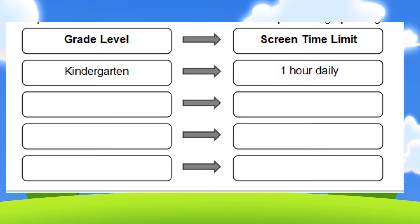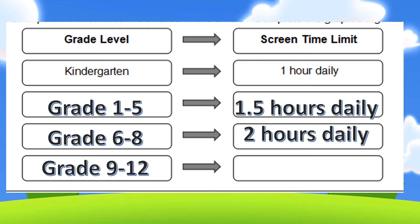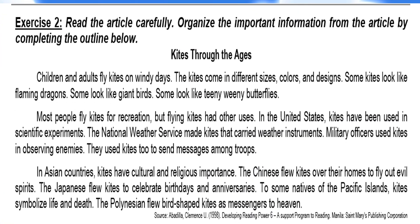Let's answer the graphic organizers. The first part is the grade level and the second part is the screen time limit. Kindergarten has a one-hour daily screen time limit. Grades one to five: 1.5 hours daily. Grades six to eight: two hours daily. And grades nine to 12: four hours daily.